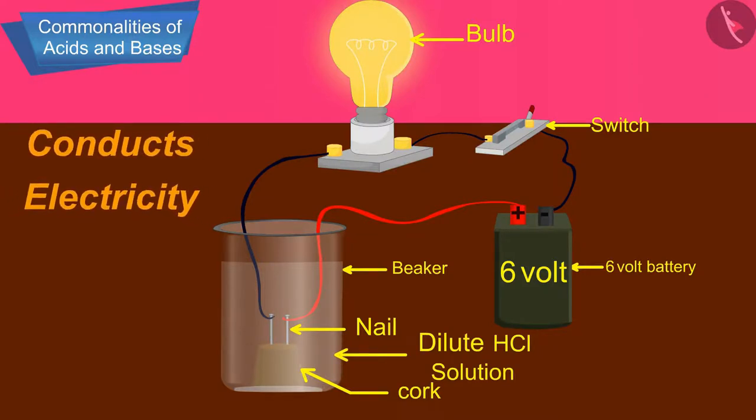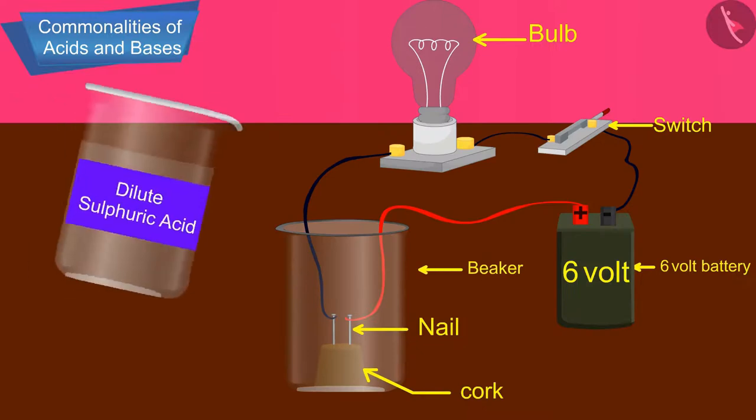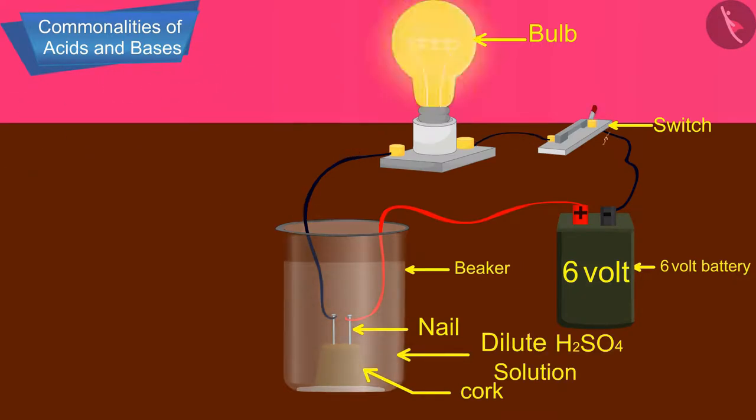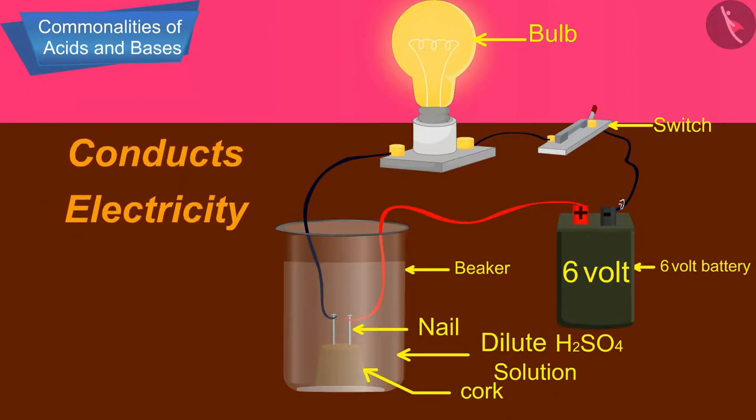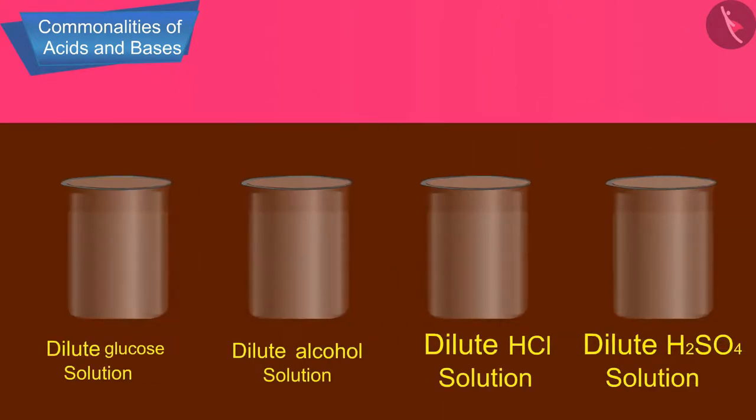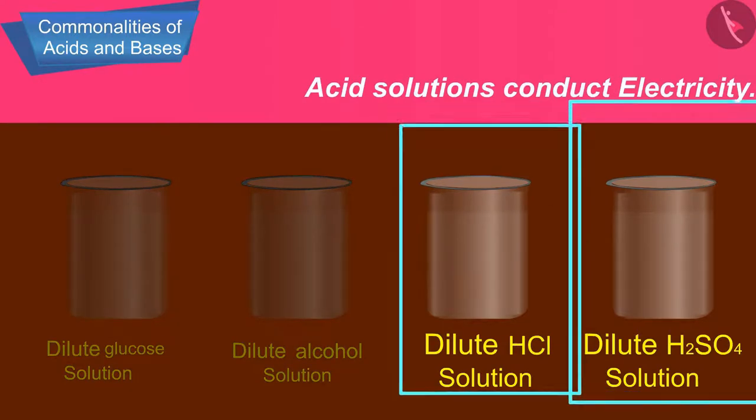If we repeat this experiment by taking sulfuric acid, the bulb glows again. This shows that sulfuric acid conducts electricity. In fact, all the acid solutions conduct electricity. Glowing of the bulb indicates that there is a flow of electric current through the solution.